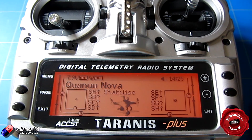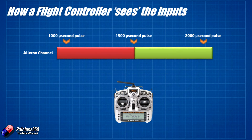Let's very quickly have a look at why that might be the case. Here we have a standard channel — we'll look at the aileron for the purposes of this demo — and we have the standard range that you would consider to be normal. There are some radios out there where the middle value is actually 1520, but a lot of flight controllers will assume that the 1500 microsecond pulse width coming to the flight controller is going to be 1500 microseconds. Anything between 1500 down to 1000 microseconds is considered a control input in one direction, and anything from 1500 up to 2000 microseconds is considered an input in the other direction.